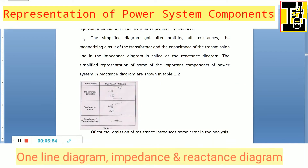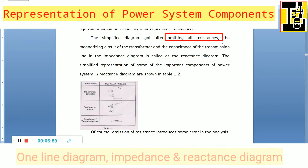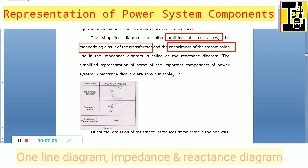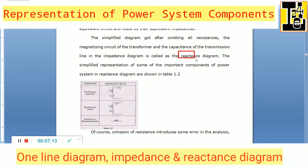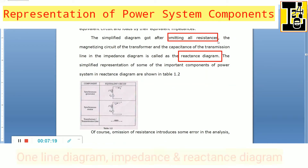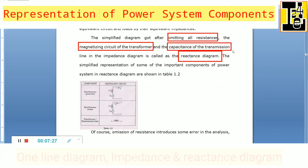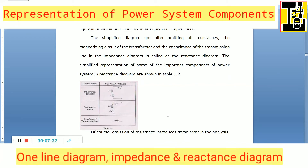A simplified diagram obtained after omitting all the resistances, the magnetizing circuit of the transformer, and the capacitance of the transmission line from the impedance diagram is called the reactance diagram. To draw the reactance diagram, we remove all resistances, the magnetizing circuit of transformers, and the capacitance of transmission lines.